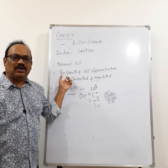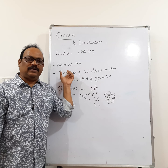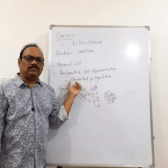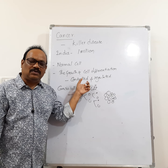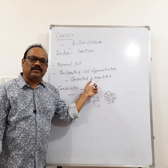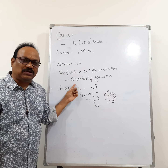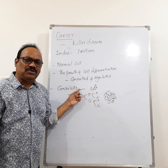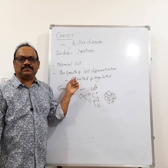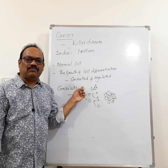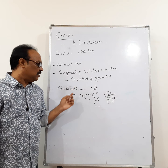In normal cells, there is control and regulation over growth and differentiation — cell division is controlled, growth is controlled, and differentiation is controlled and regulated. In cancer cells, the control and regulation of growth and differentiation is completely lost.